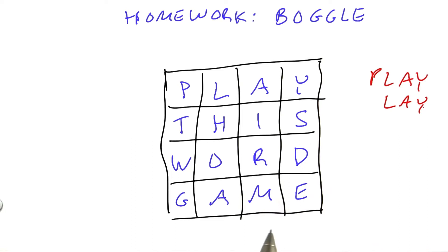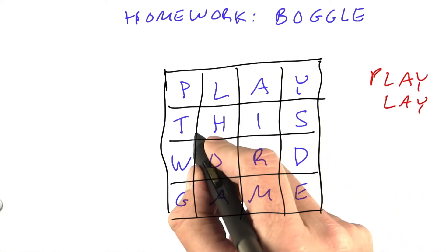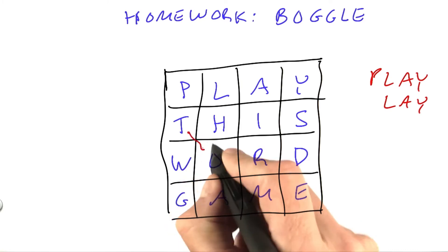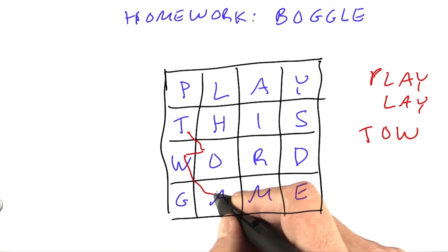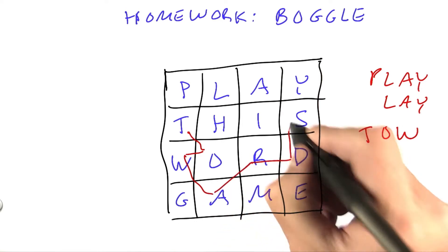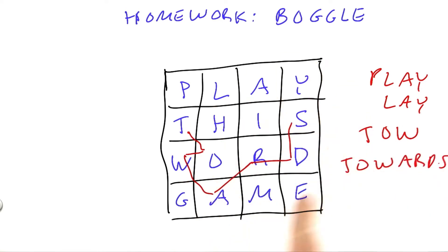Lay would be a word as well. They can turn corners and go in any direction. Starting at T, we could go T-O-W. We can continue from there, A-R-D-S. In general, we can go to any adjacent square horizontally, vertically, or diagonally.